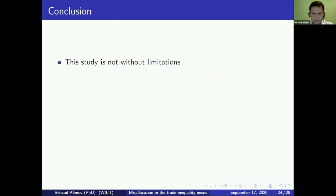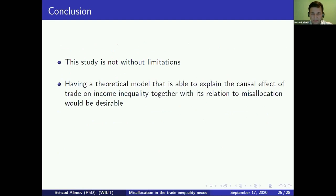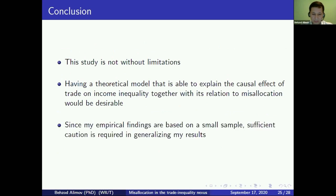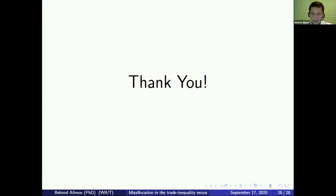My study is not without limitations — it is still ongoing research. Having a theoretical model able to explain the causal effect of trade and inequality together with its relation to misallocation would of course be desirable. Because my empirical findings are based on a relatively small sample — both time and cross-section dimensions — it may not be desirable to generalize my results. Thank you. If you have any questions, I can answer.